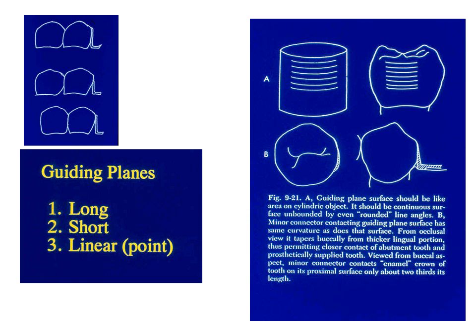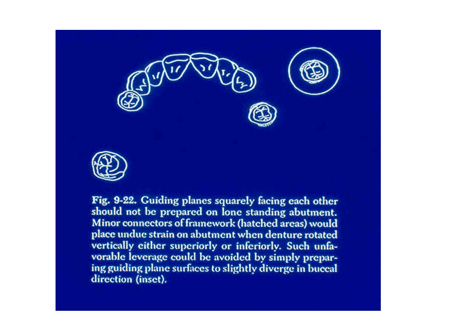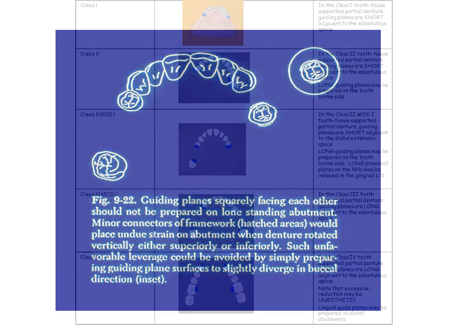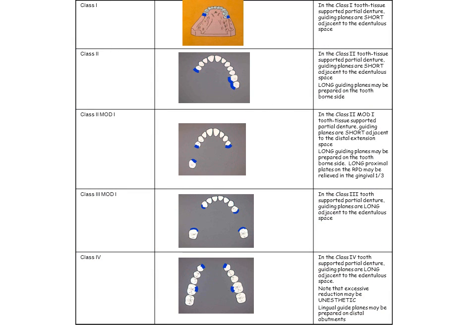The illustration above shows the long and short guiding plane concept. Some schools teach the linear point contact. Note the convex buccolingual contour of the guiding plane. The lone-standing abutment, usually a maxillary second premolar, is frequently encountered. Guiding planes prepared on adjacent surfaces should diverge in a buccal direction to reduce stress. The table illustrates the location and type of guiding planes appropriate for various situations.